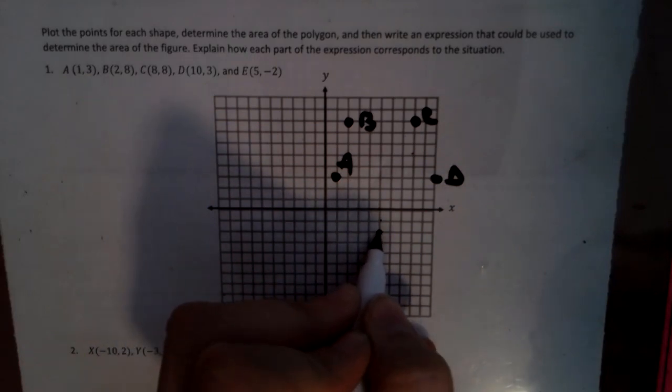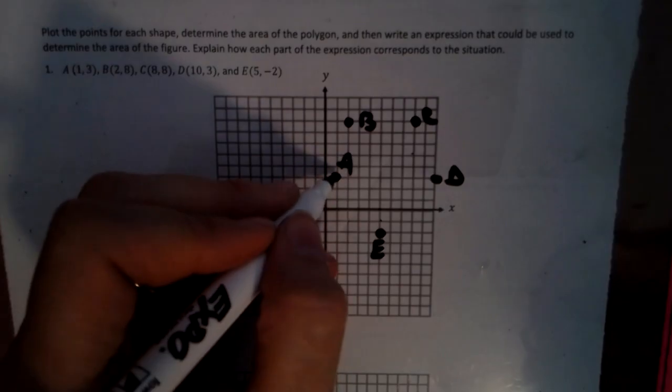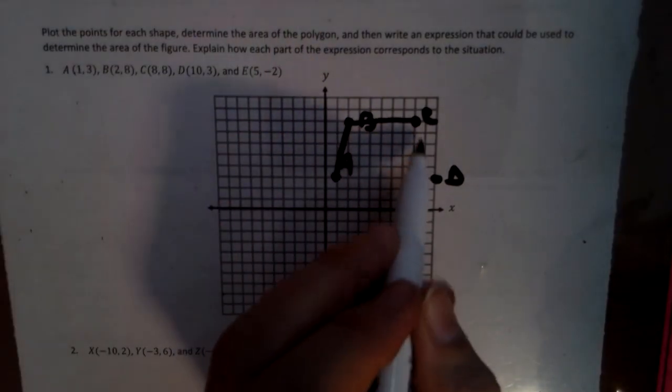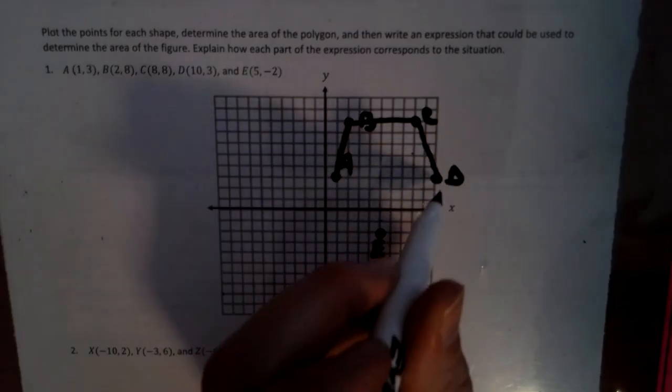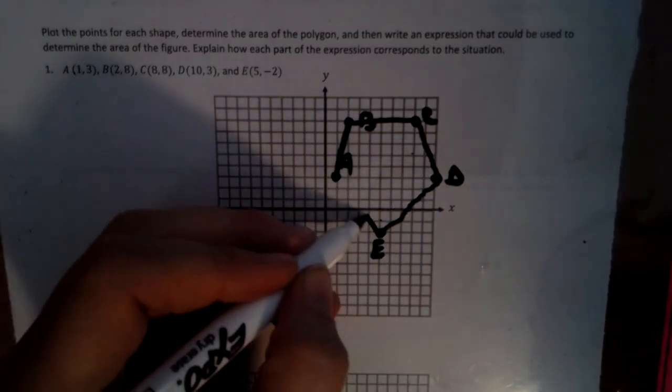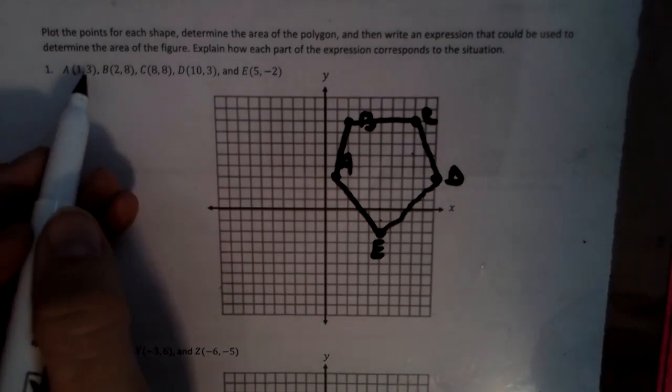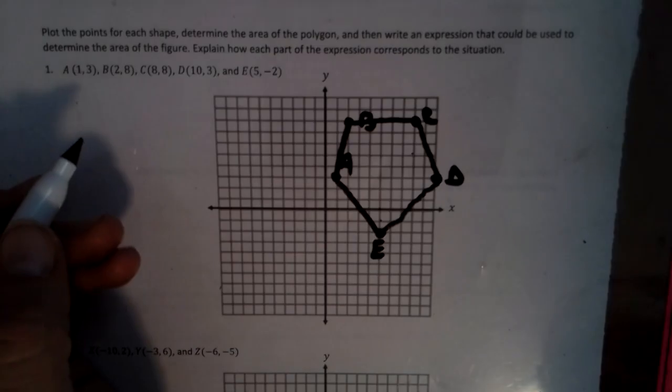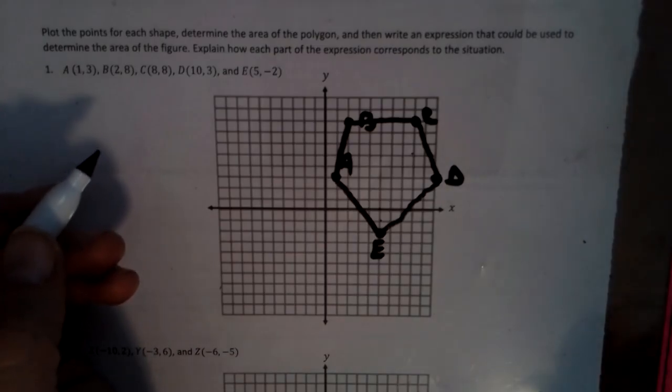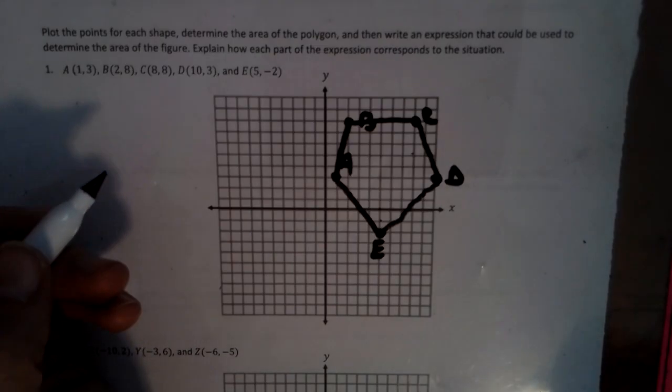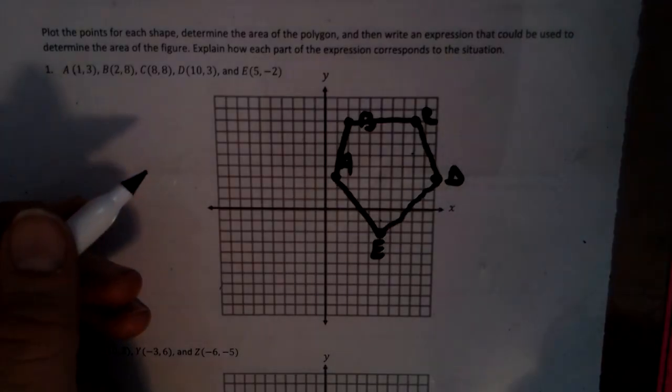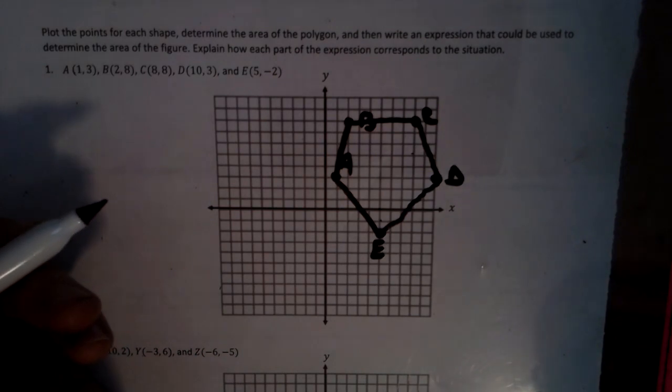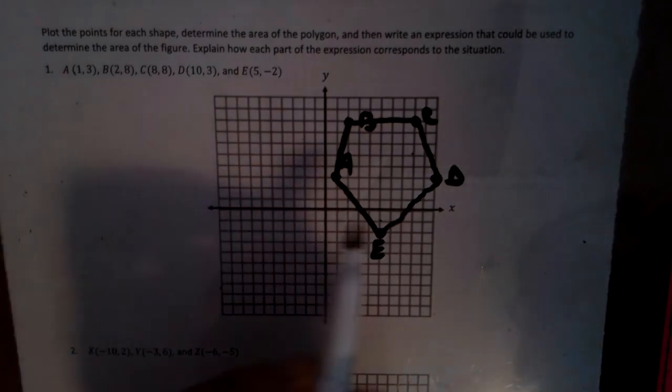D is over 10, up three. And then E is five but two down. And then we have to connect our points so...